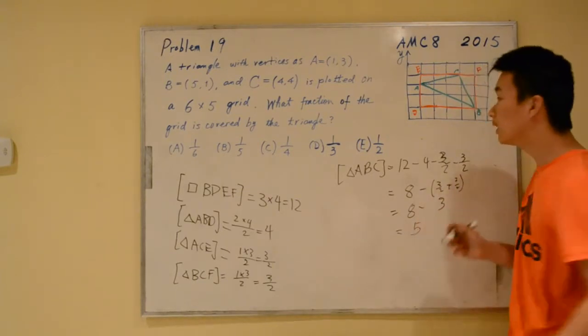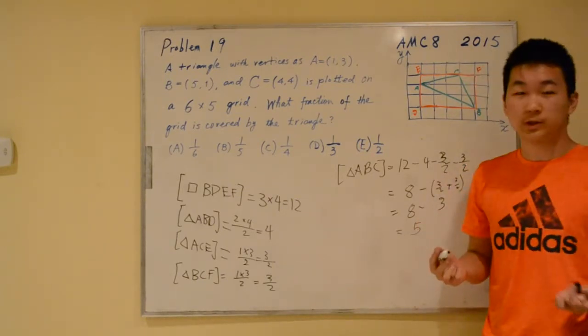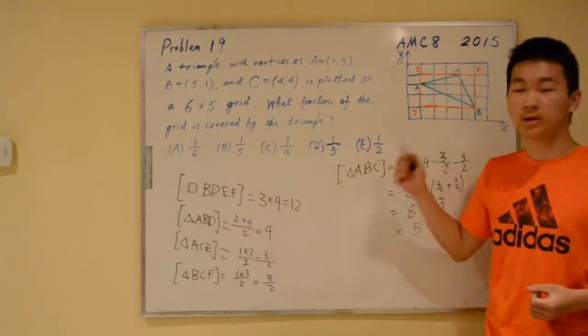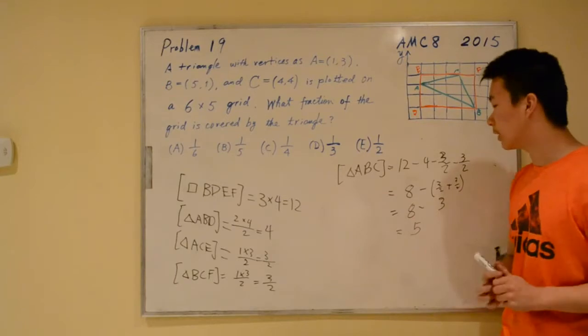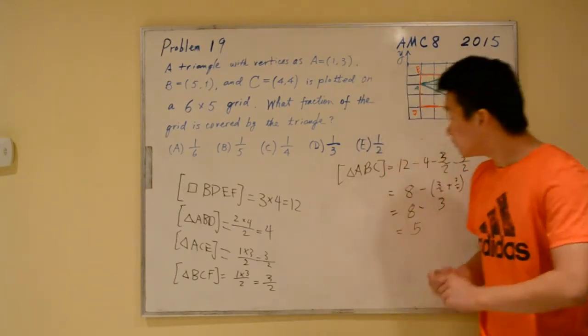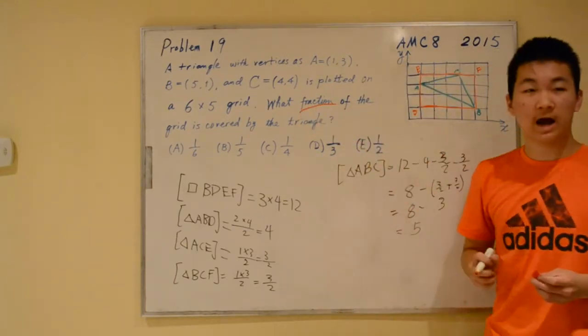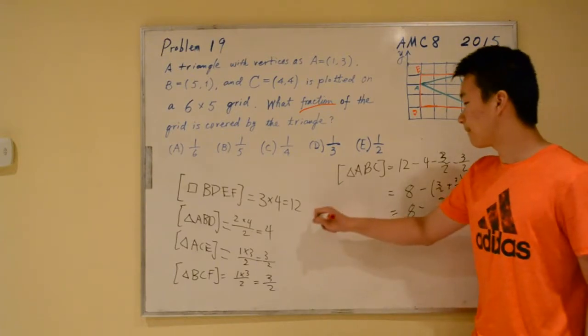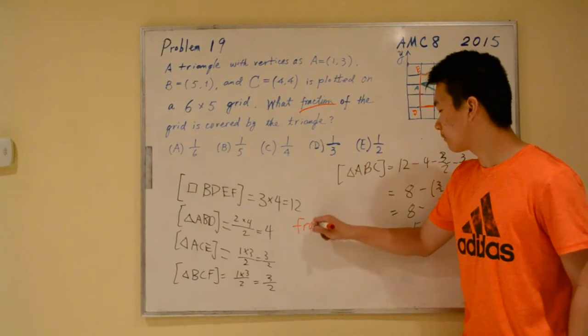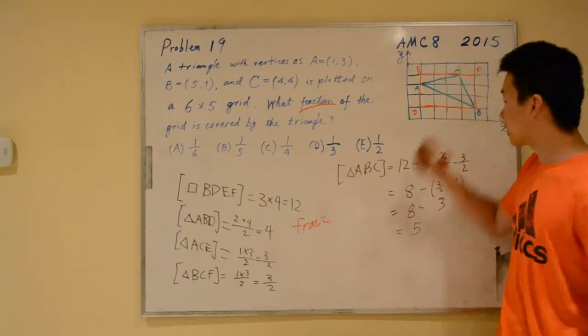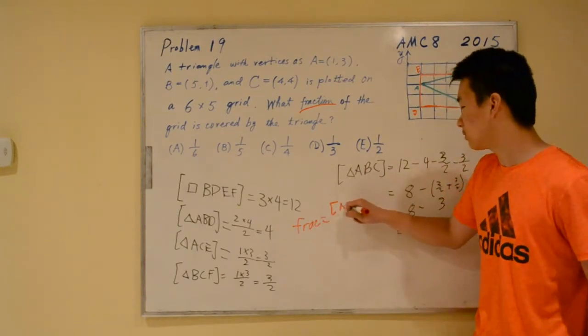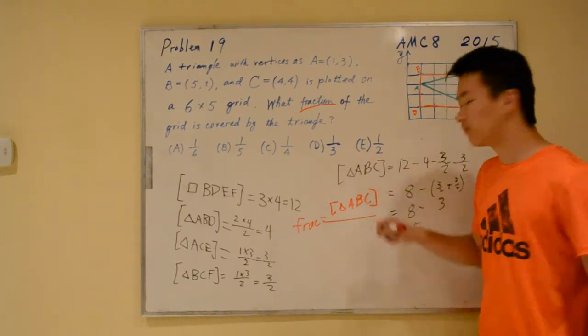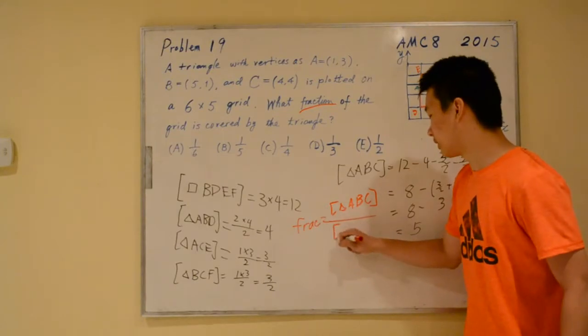We're not looking for just the area of triangle ABC. We're looking for the fraction that this triangle covers on the grid. The fraction is simply the area of triangle ABC divided by the area of the grid.